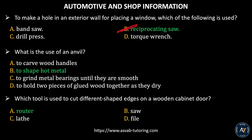The next question: what is the use of an anvil? Option A, to carve wood handles. Option B, to shape hot metals. Option C, to grind metal bearings until they are smooth. Option D, to hold two pieces of glued wood together as they dry. The correct answer is Option B, to shape hot metals.